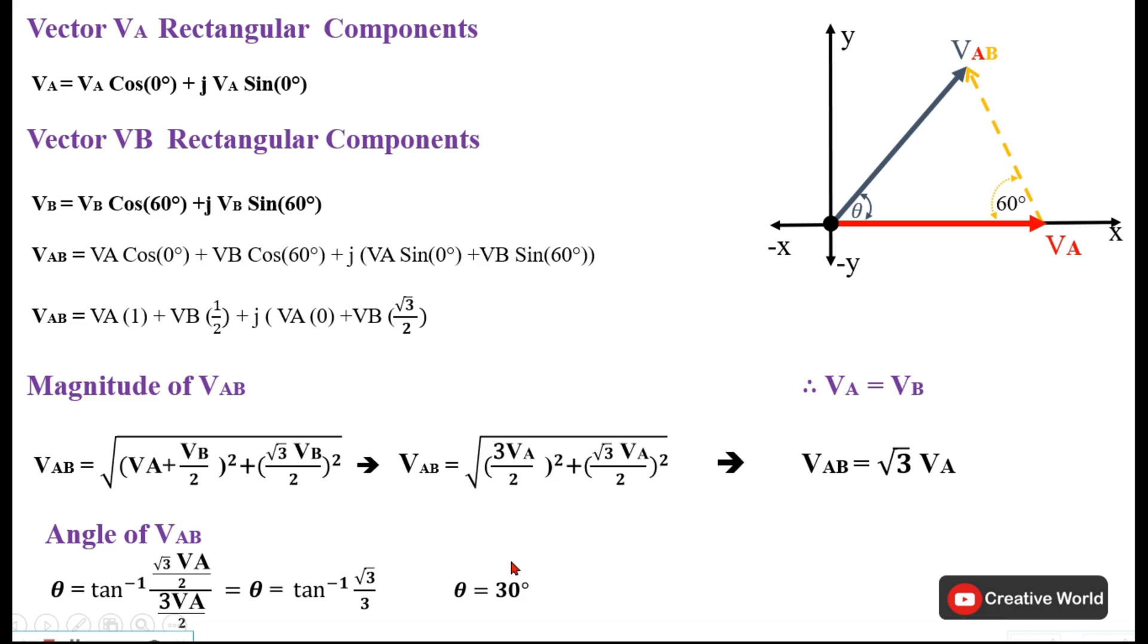So we may write both these in this form, and hence proved this formula that our line voltage is equal to square root 3 times the amplitude of phase voltage and having an angle of 30 degrees. Thank you. See you in the next video.